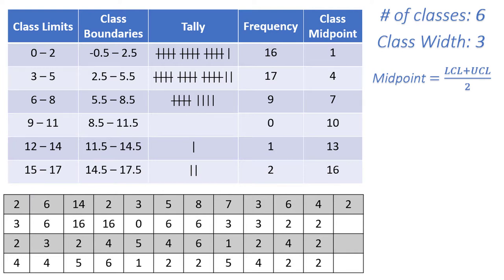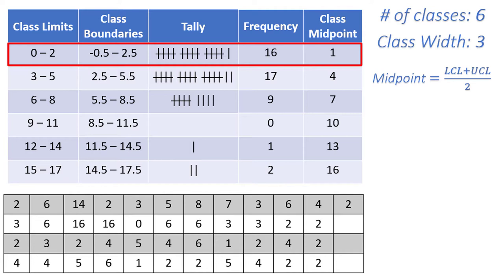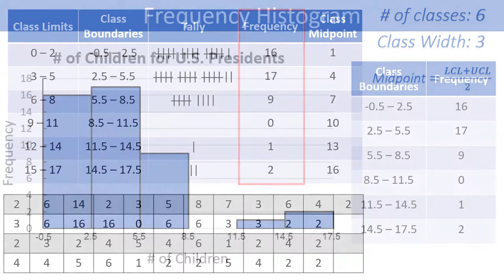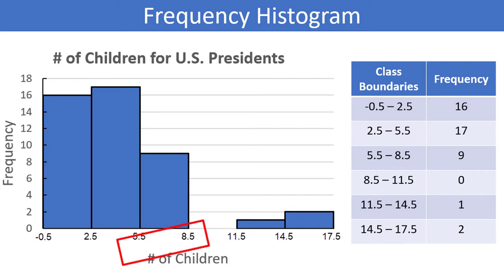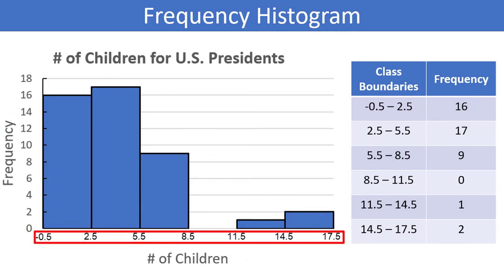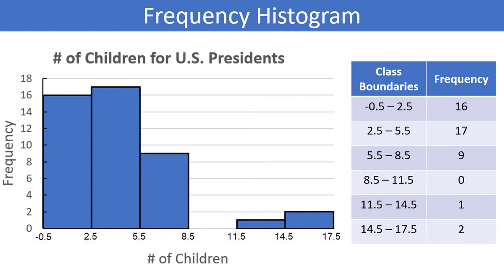Each row in the frequency table will become a bar in the histogram, with a height equal to the frequency. The horizontal axis should be the quantitative variable — in our case the number of children — and the vertical axis should be the frequency. The labels on the horizontal axis should be the class boundaries. The bars for adjacent classes should be touching each other to represent the continuous scale of our number system. Some instructors might say you should always start your graph at 0, but that would create an awkward situation here since we have negative 0.5 for our first class boundary, so for convenience I'm starting right at negative 0.5.